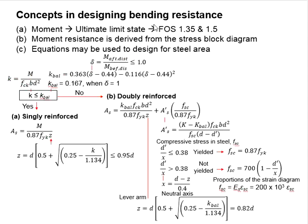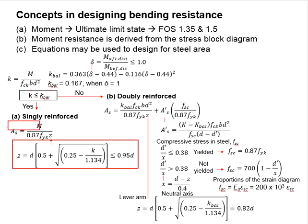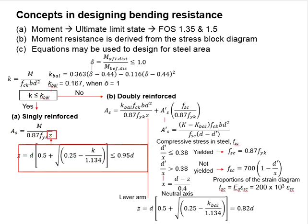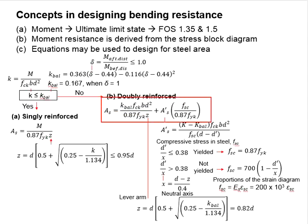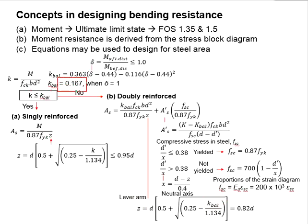The design equations involve: finding k, then checking k against k-balance, which is 0.167. If k is less than or equal to 0.167, the section is singly reinforced; if k exceeds 0.167, it is doubly reinforced. For a singly reinforced section, the next step is finding the lever arm Z and then determining the area of steel AS. For a doubly reinforced section, more equations are involved, including AS, AS-prime, and Z. The lever arm Z here is worked on the basis of k-balance equal to 0.167, giving Z equals 0.82d.